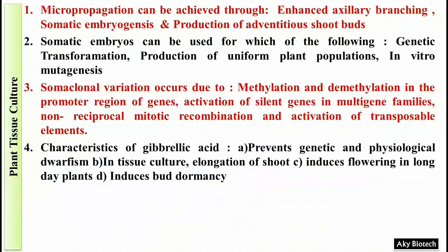Question 4: Characteristics of gibberellin (GA). Important points: (a) it prevents genetic and physiological dwarfism; (b) in tissue culture it causes elongation of shoot; (c) it induces flowering in long day plants; (d) it induces bud dormancy.